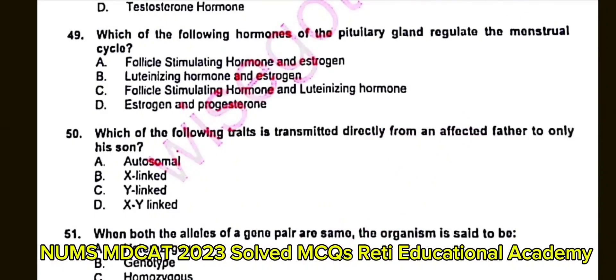Question number 49: Which of the following hormones of the pituitary gland regulate the menstrual cycle? A. Follicle stimulating hormone and estrogen. B. Luteinizing hormone and estrogen. C. Follicle stimulating hormone and luteinizing hormone. D. Estrogen and progesterone. The correct answer is C: Follicle stimulating hormone and luteinizing hormone.